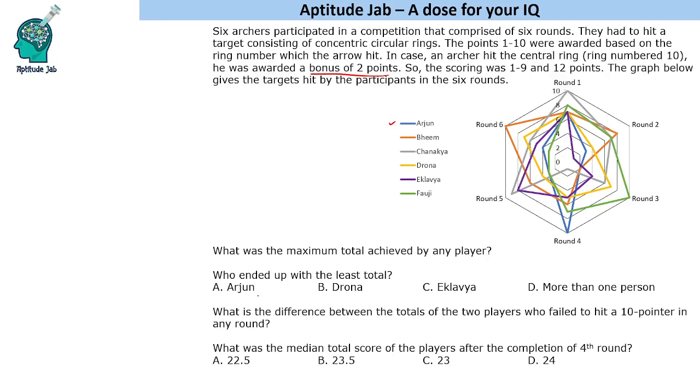What is the difference between the totals of the two players who failed to hit a 10 pointer in any round? If we see, Arjun has hit a 10 pointer here, then Bhim has also hit a 10 pointer in round 6. Chanakya also hit a 10 pointer. Drone did not hit a 10 pointer. Eklavi also did not hit a 10 pointer and 4G has hit a 10 pointer. So these two people are Drone and Eklavi.